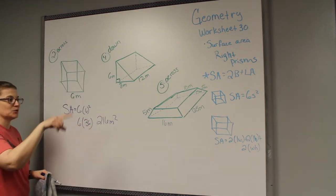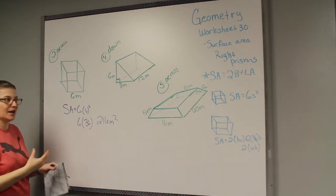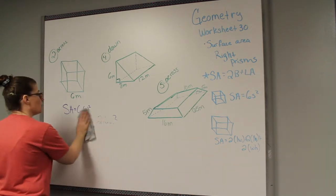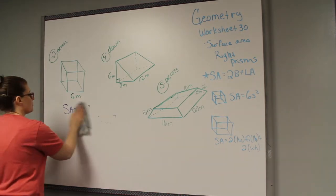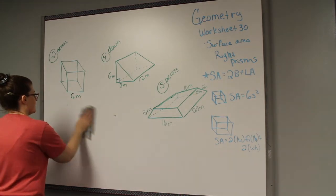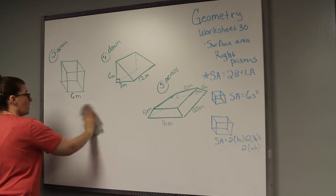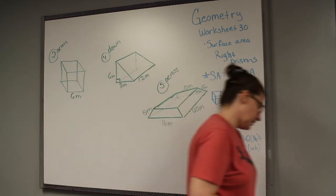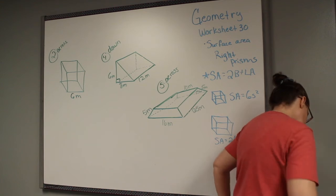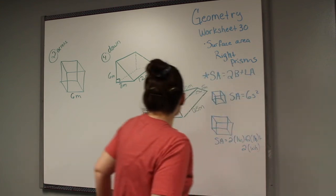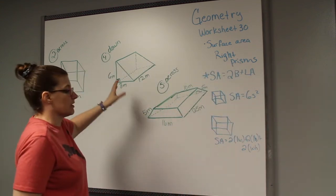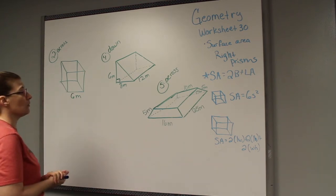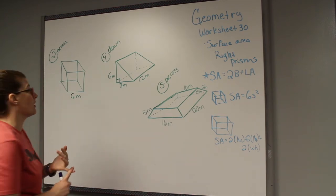For a rectangular prism, you can do length times width on all of the sides and add them all together. I want to focus more on the triangle and trapezoid problems because they take the longest. Four down is a triangle, and there's another triangle at seven across — you can use the same skills for both.